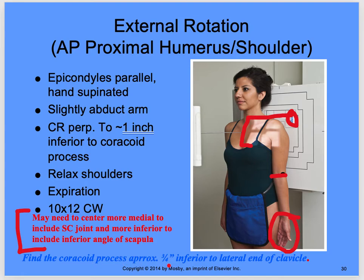Find the coracoid process approximately three-quarter inch inferior to the lateral end of the clavicle. Just look for your clavicle, feel it across to the lateral end, and then come down about three-quarters of an inch inferior to that lateral end — you're going to find that coracoid. That's where you center to, but it's going to be a little bit more medial to pick up that sternoclavicular joint.